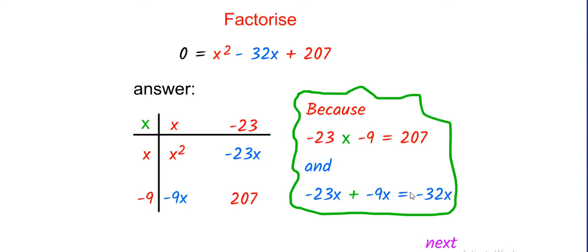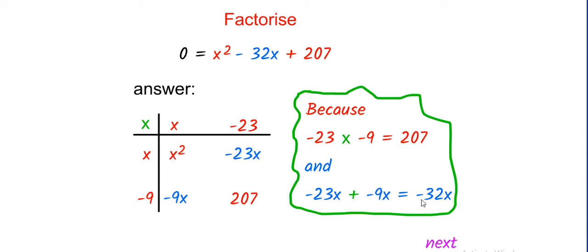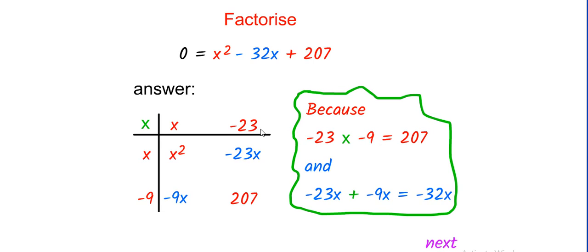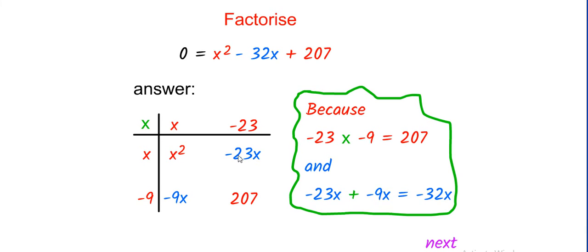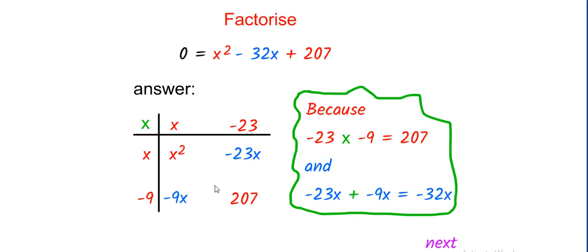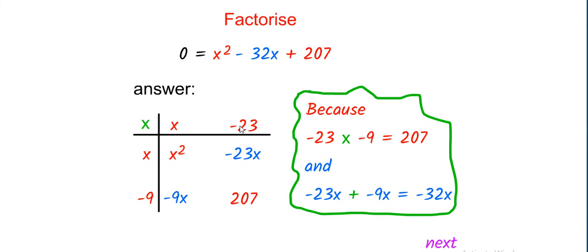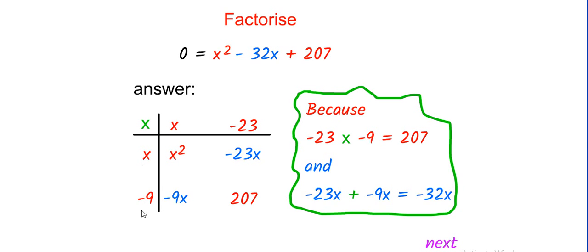Look at the red one: minus 23 times minus 9 gives 207. And the blue one shows the result of addition: minus 23x plus minus 9x equals minus 32x. So the factorization answer is (x − 23)(x − 9). Thank you!